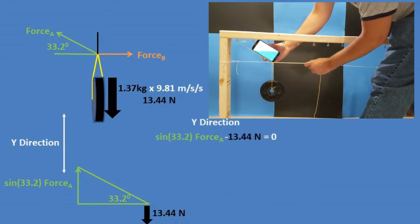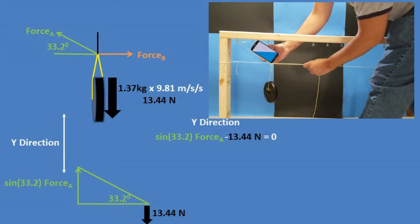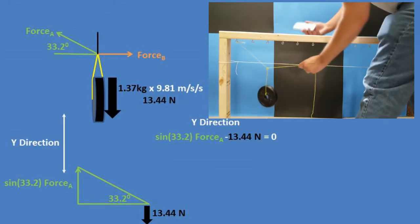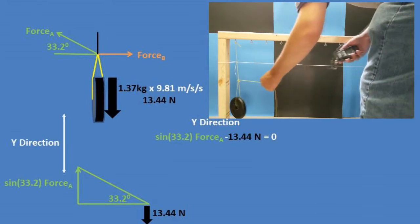To solve this problem, we have to look at the free body diagram to form equations. We notice that due to no movement in the y direction, the sine value of 33.2 degrees times the tension force A is canceling out the hanging mass force.